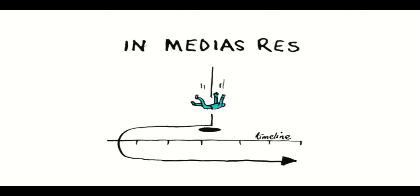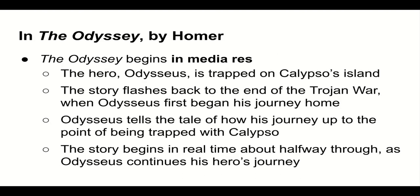In the Odyssey by Homer, it begins in medias res. Because the Odyssey is the story of Odysseus' journey home from the Trojan War, you might expect the story to start as he leaves the Trojan War and heads out for home. But Homer actually began telling the story as Odysseus is trapped on Calypso's Island, many years into his journey. The story then flashes back to the end of the Trojan War, with Odysseus actually telling the story of how he reached Calypso's Island and what he went through from the end of the war up until that point.